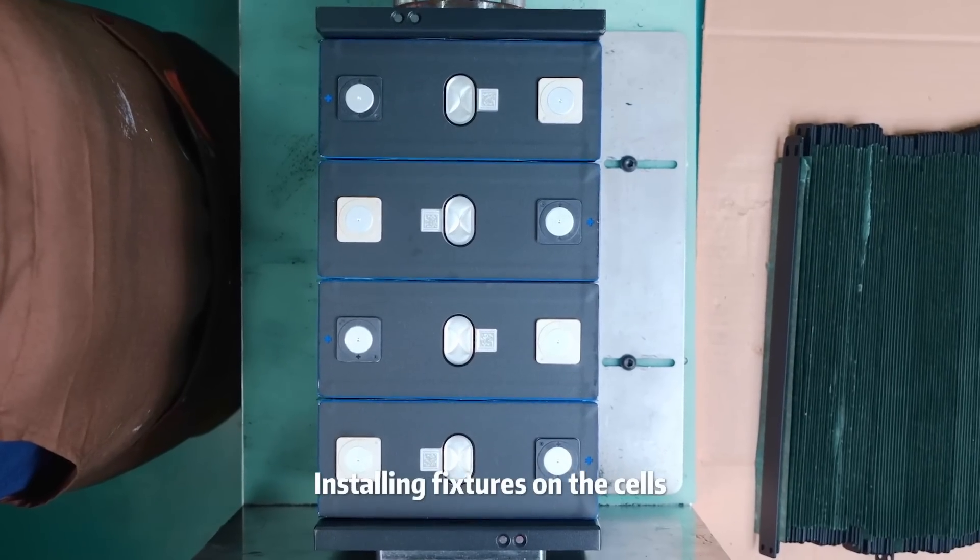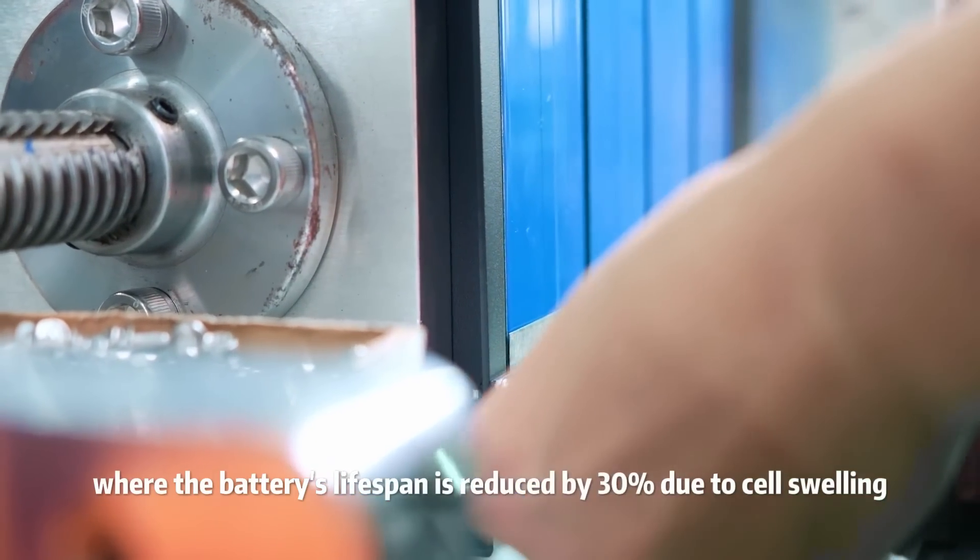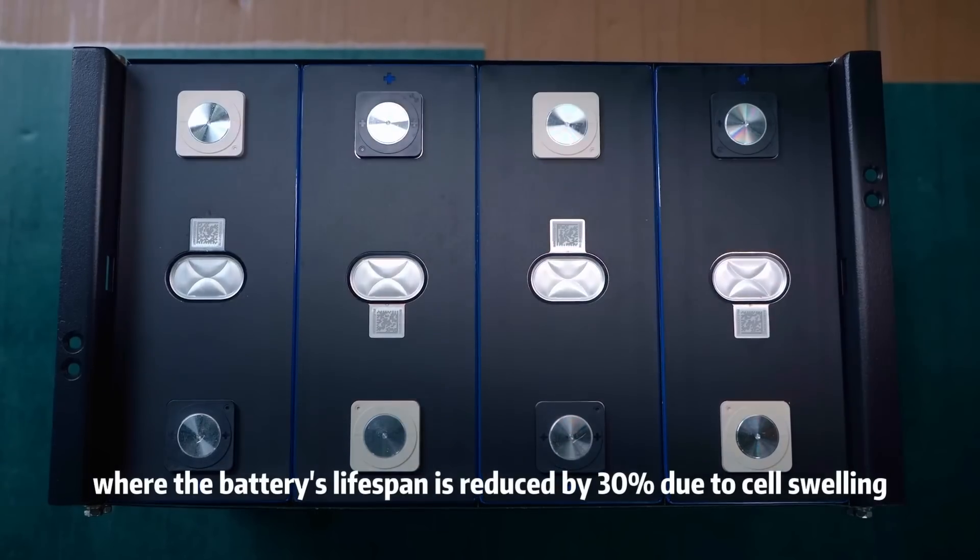Installing fixtures on the cells can prevent a situation where the battery's lifespan is reduced by 30% due to cell swelling.